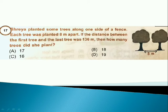Shreya planted some trees along one side of a fence. Each tree was planted 8 meters apart. If distance between the first tree and the last tree was 136 meters, then how many trees did she plant?